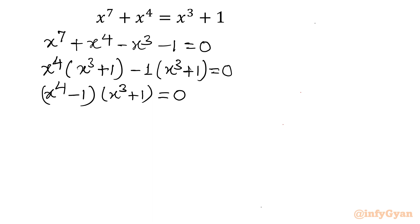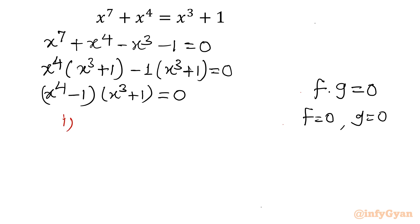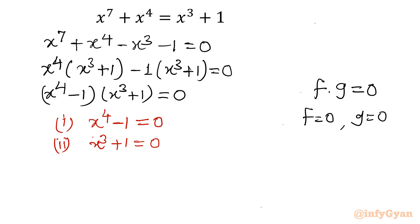Now we have to solve both products, because we know that f·g = 0 means either f = 0 or g = 0. So there are two equation sets: Number 1, x⁴ - 1 = 0, and Number 2, x³ + 1 = 0. Let's solve both equations.